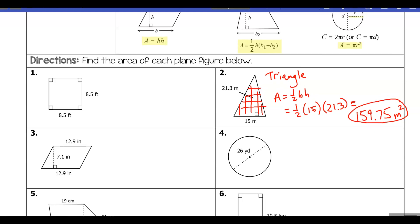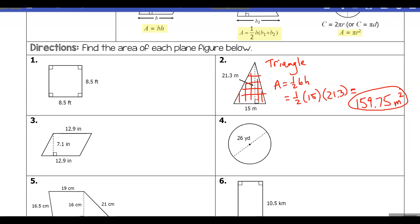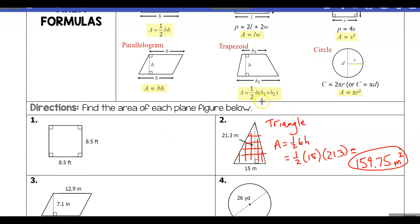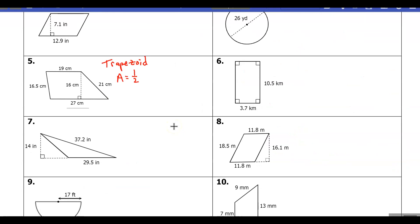Let's go down to number five. First we want to identify the shape - this is a trapezoid. If you forget your formulas, feel free to scroll back up and check those out. We have one half times h times the sum of b1 and b2. Then we'll substitute in the height which is 16.